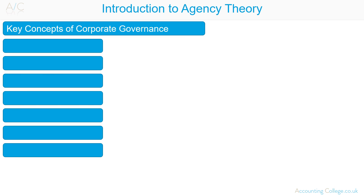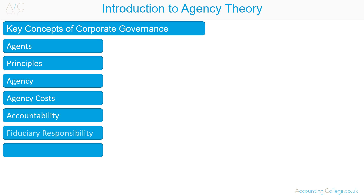The key terminology in agency theory is: agents, principals, agency, agency costs, accountability, fiduciary responsibility, and stakeholders.